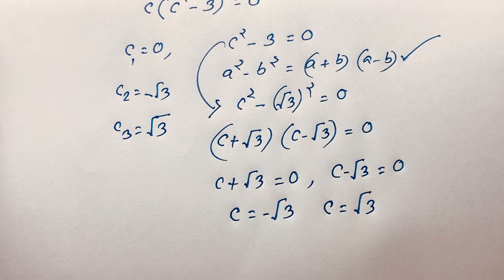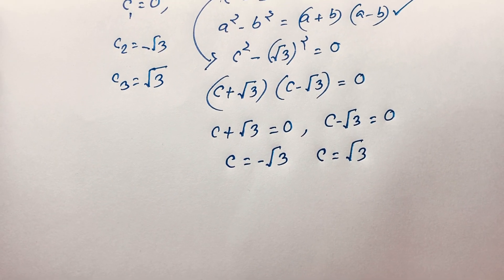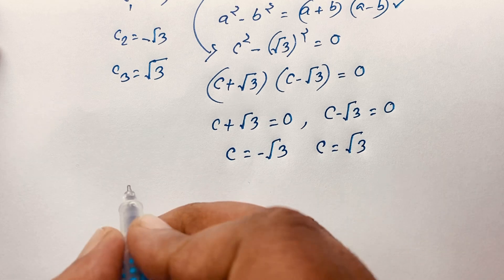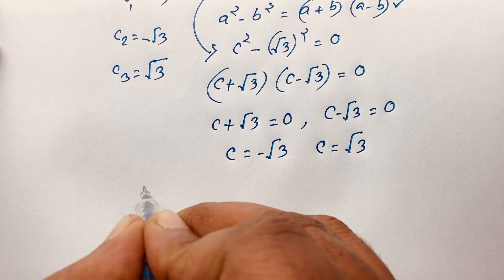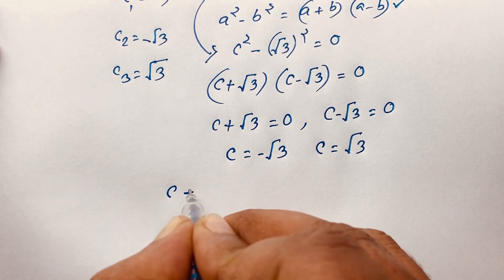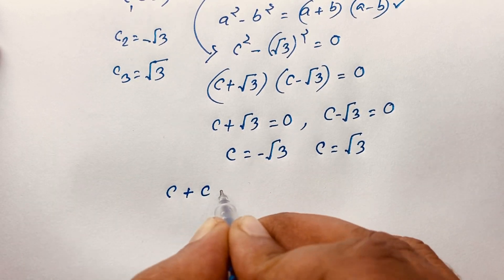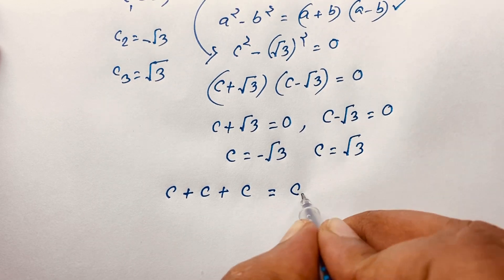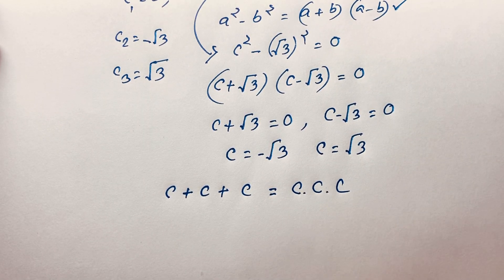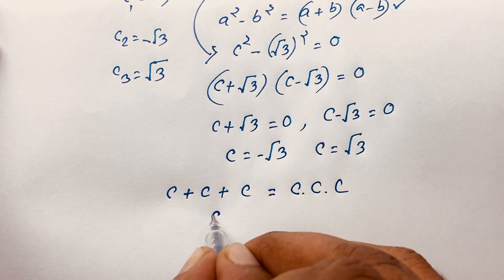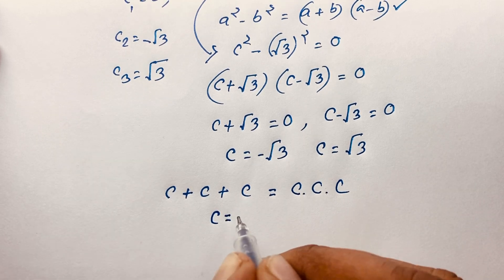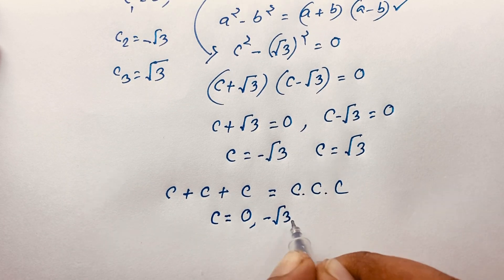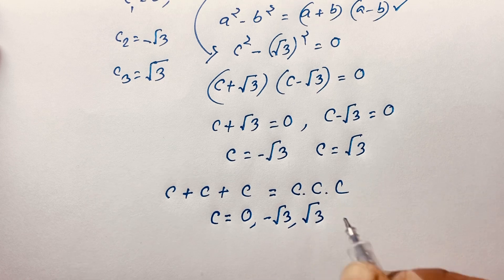This is our final answer in this expression. Our question is C plus C plus C is equal to C times C times C, and C is equal to 0, negative square root 3, and positive square root 3.